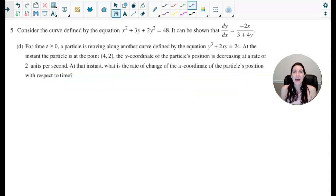Lastly, part D. For time T greater than or equal to 0, a particle moving along another curve defined by this new equation. And at the instant the particle is at the point 4, 2, the y-coordinate of the particle's position is decreasing at a rate of 2 units per second. So this is looking like a related rates problem to me. So some things I'm going to write down is that I have the point 4, 2. I also see that the y-coordinate of the particle's position is decreasing at a rate of 2, so dy dt would be negative 2. And at that instant, what is the rate of change of the x-coordinate of the particle's position? So it looks like I am looking for dx dt. So I'm going to take the derivative of this new equation, and I'm going to take the derivative with respect to T since I can tell it's a related rates problem.